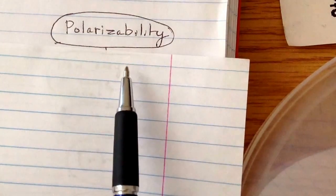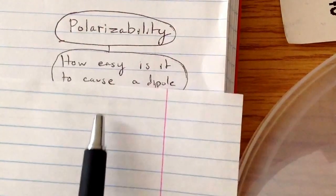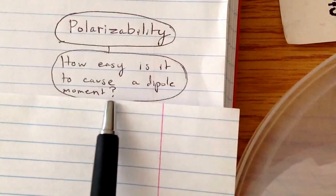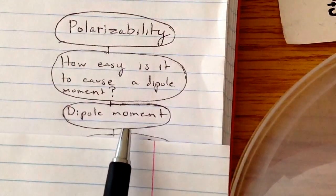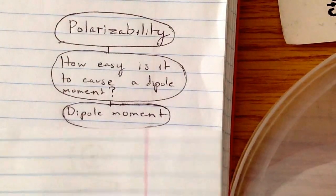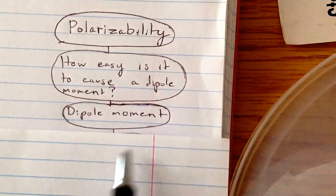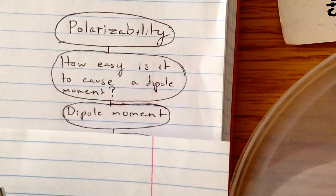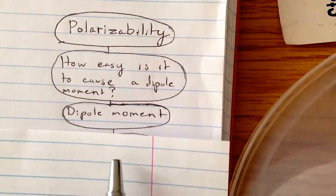So what is polarizability? Polarizability is simply how easy it is to cause a dipole moment. A dipole moment is how easy you can shift the electrons so that one side will have a positive charge and one side will have a negative charge.